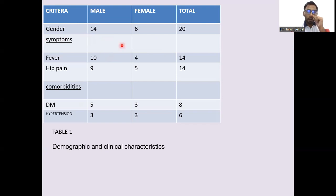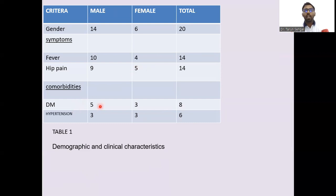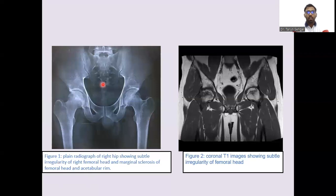Symptoms included fever and hip pain. Ten male patients had fever and 9 had hip pain. Four females had fever and 5 had hip pain. Regarding comorbidities: 5 male patients had diabetes mellitus and 3 had hypertension; 3 females had diabetes and 3 had hypertension.